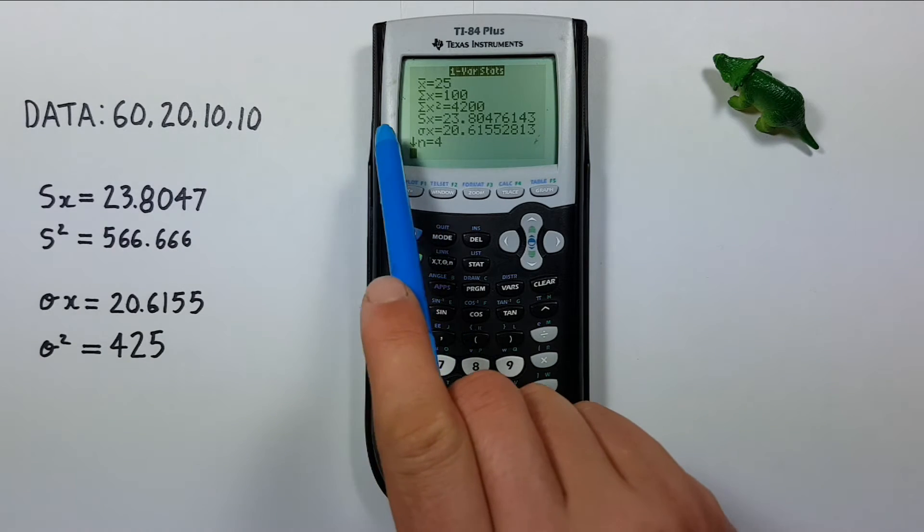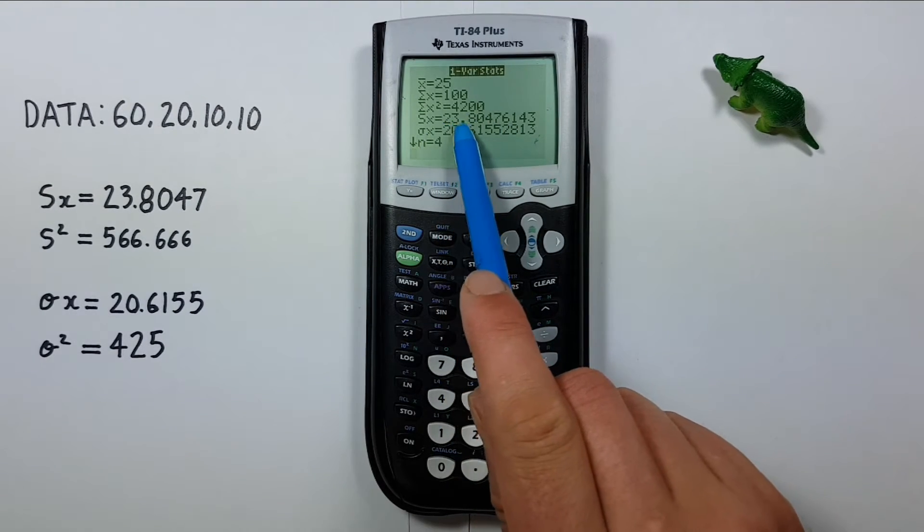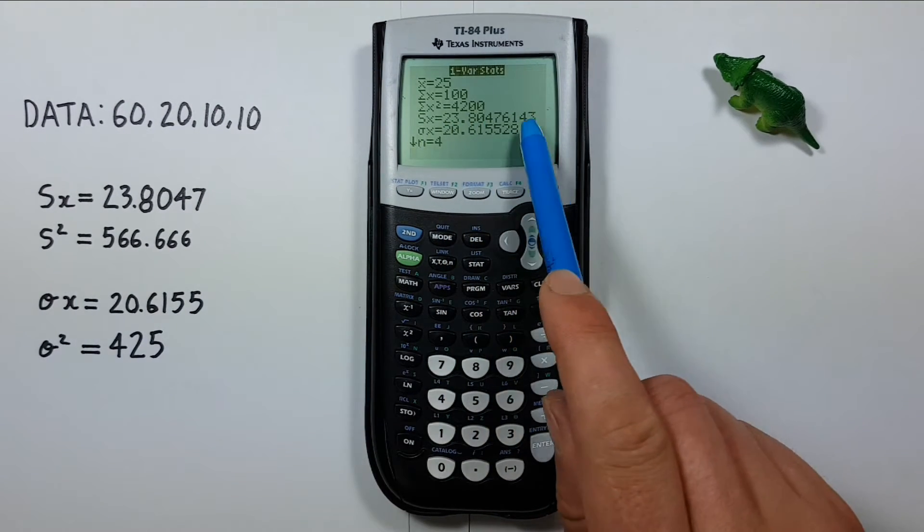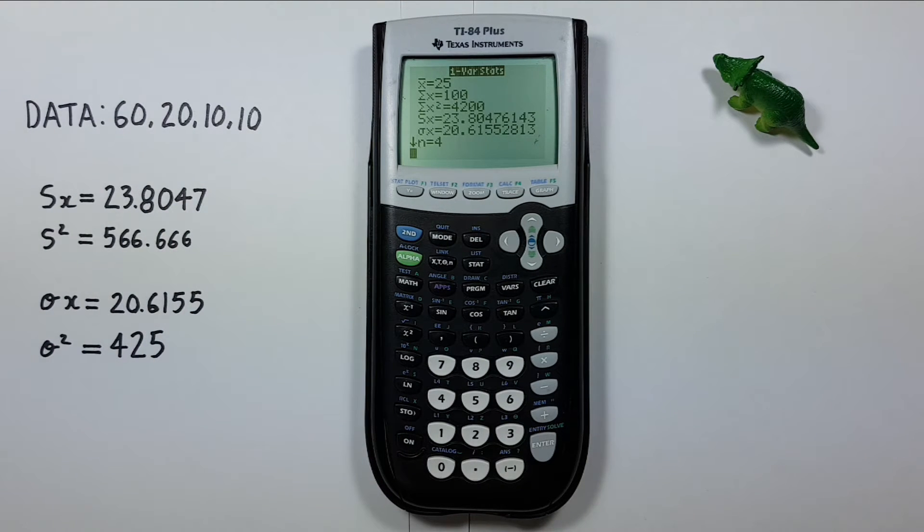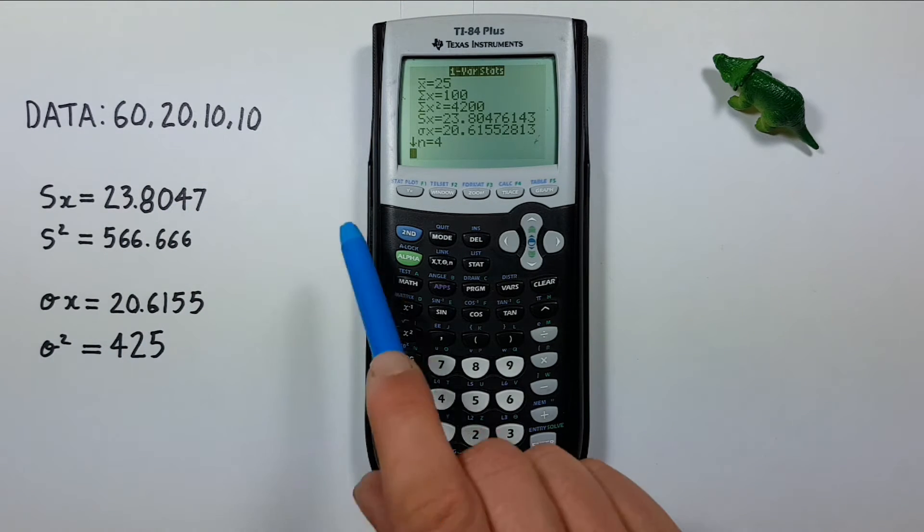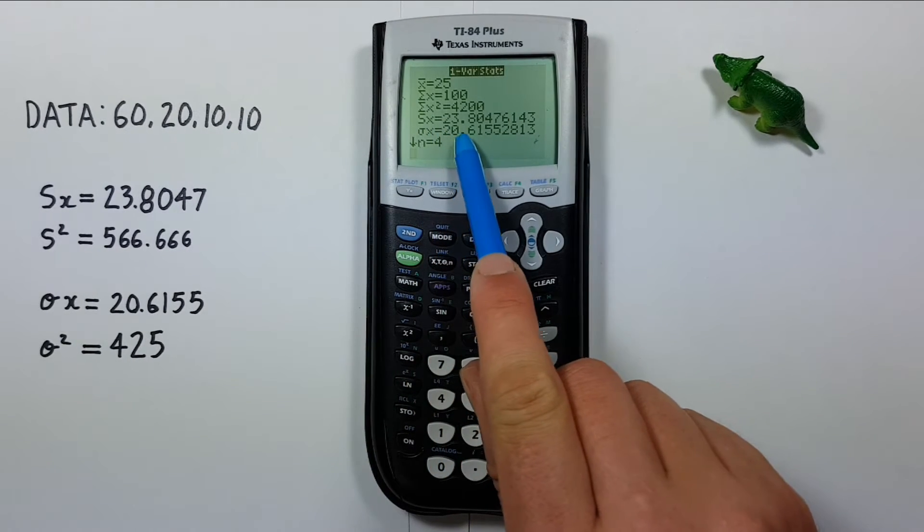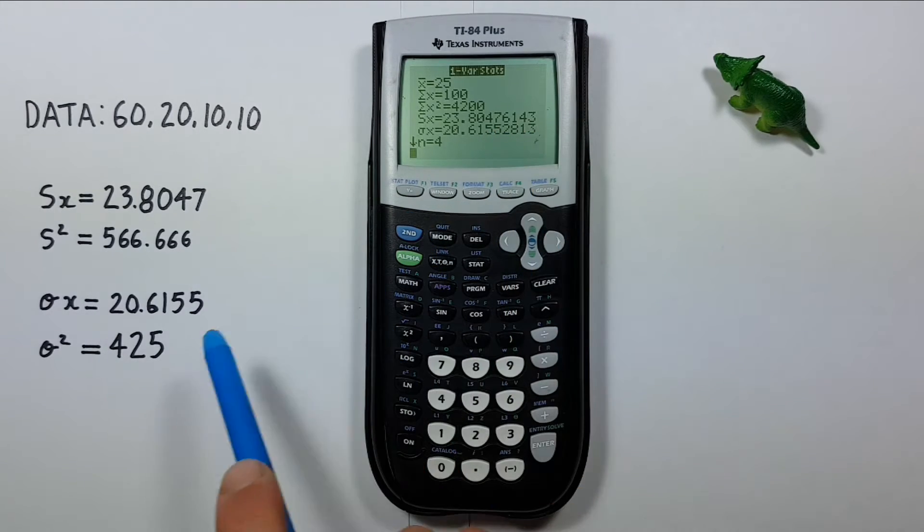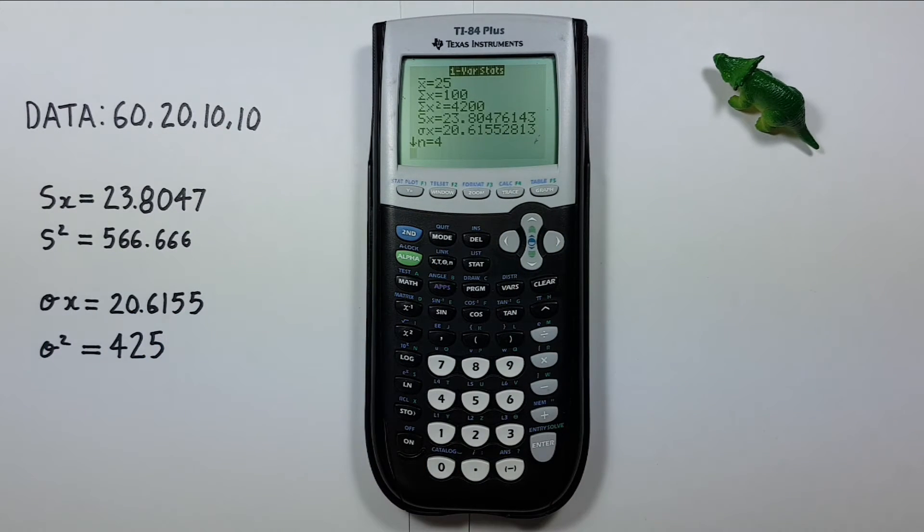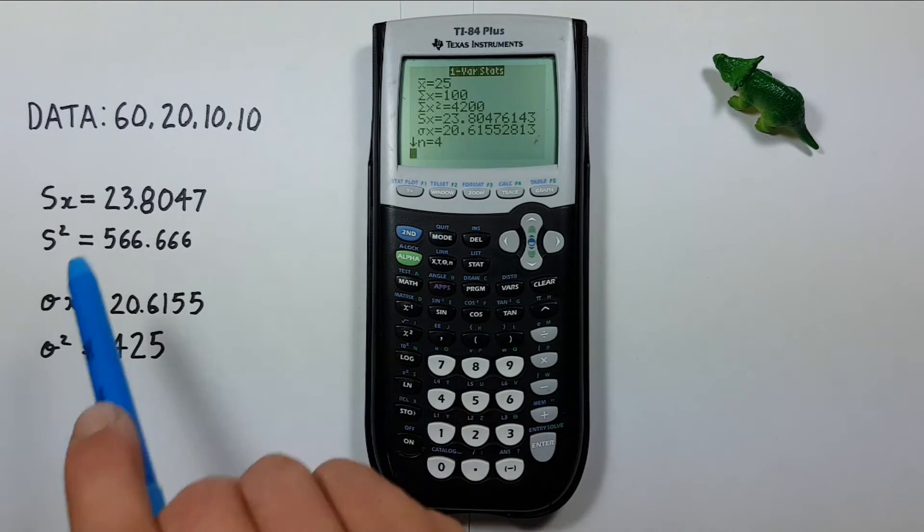The large sigma x or sample standard deviation which is 23.8047 etc. Yep that's correct. And the population standard deviation or the small sigma x which is equal to 20.615528 etc. Yep that's correct as well. Next we have n equals 4, which tells us there are 4 items in our data set. Which yep that's correct.